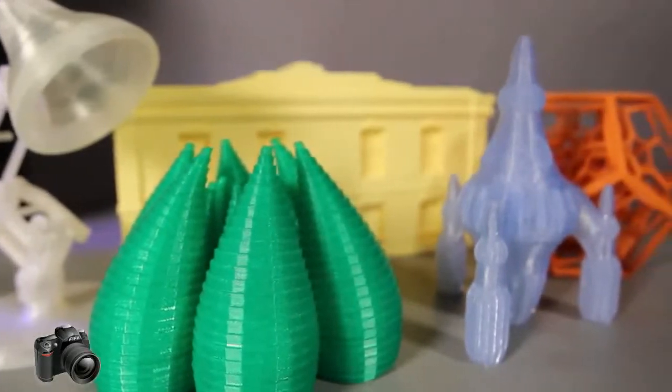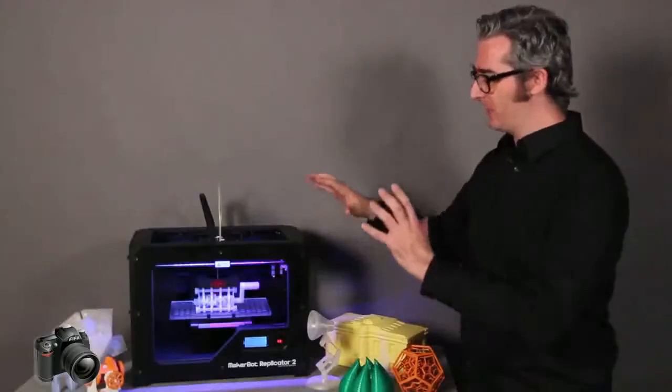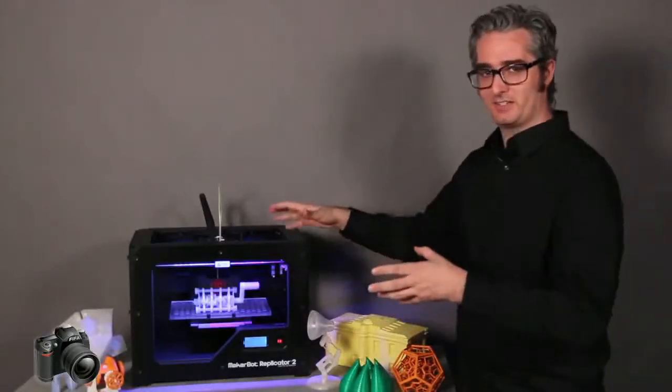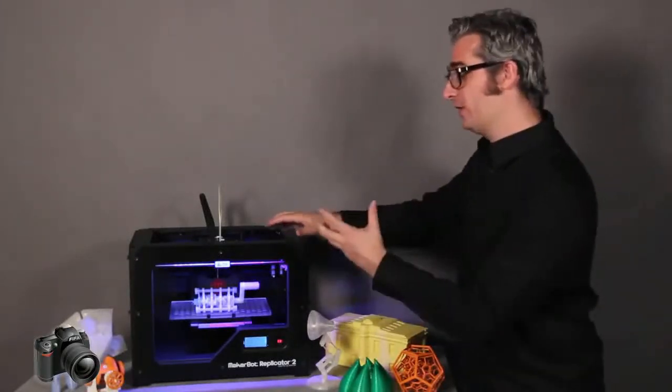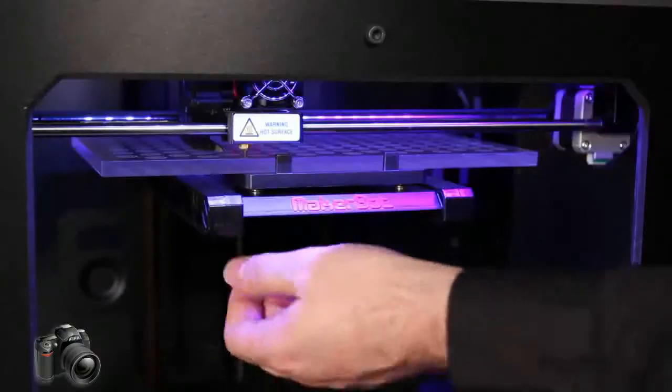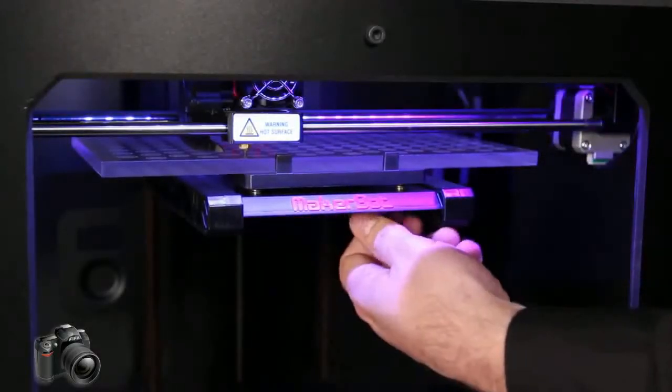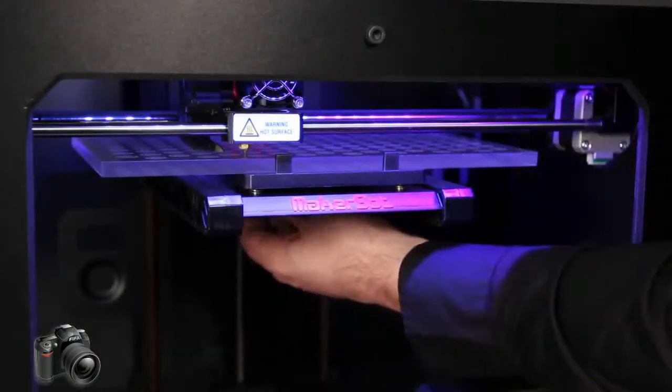The MakerBot Replicator 2 desktop 3D printer comes assembled, so you'll take it out of the box and you'll be making in minutes. It also comes equipped with a new, easy-to-use 3-point leveling system, so that you can level your build platform quickly, easily, and with more precision.